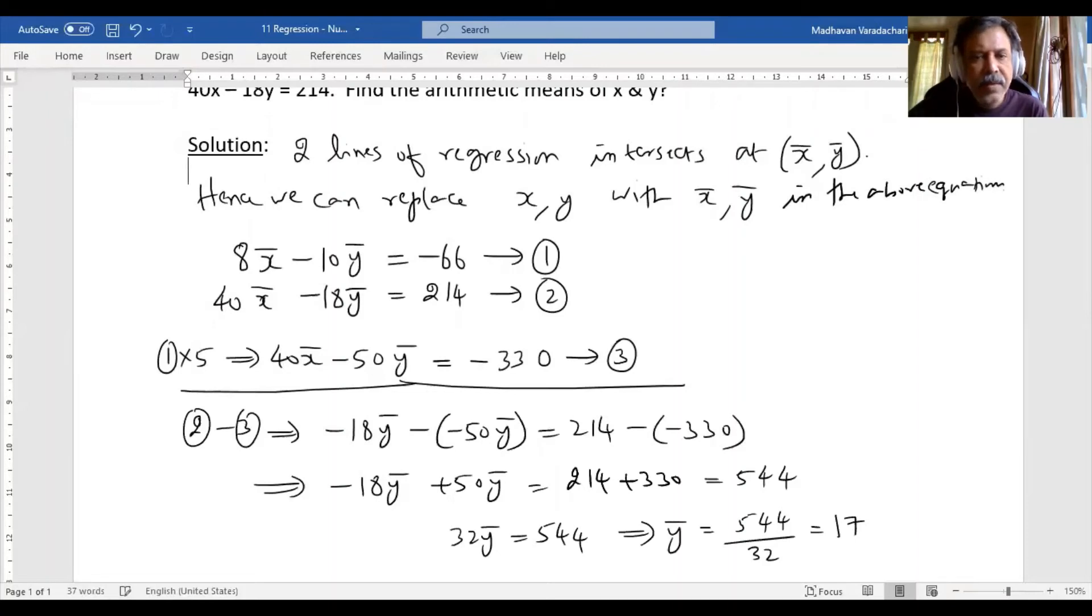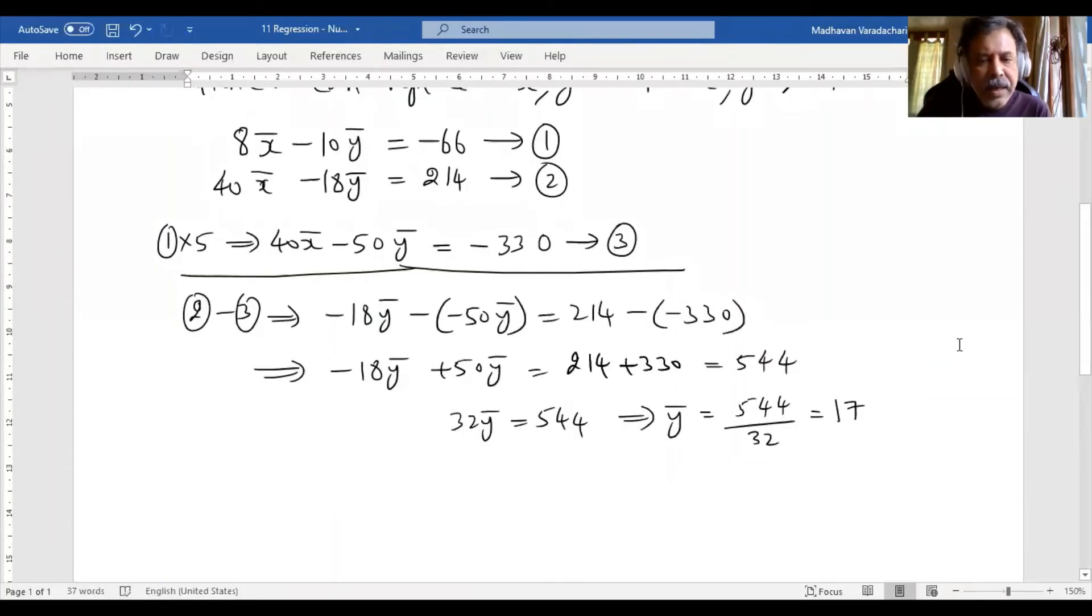So we got Ȳ = 17. Now I can substitute this in the first equation. 8X̄ = 10 × 17 - 66, which is 170 - 66, giving us 104.